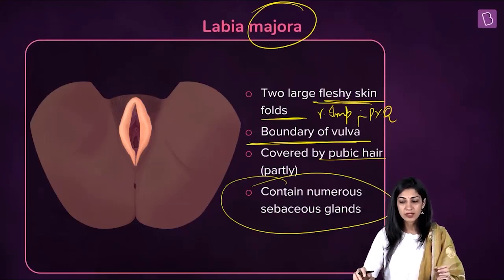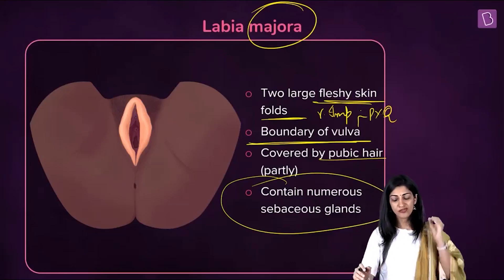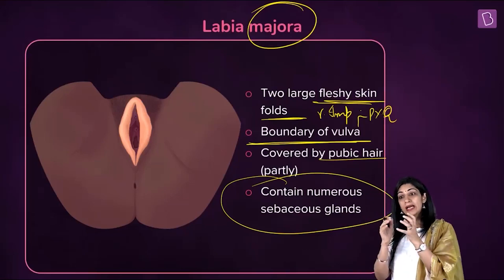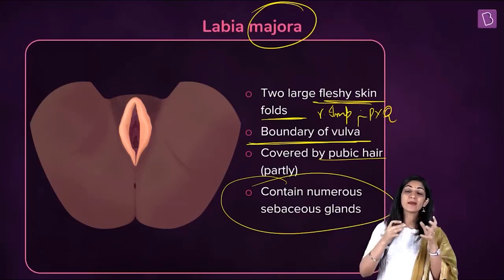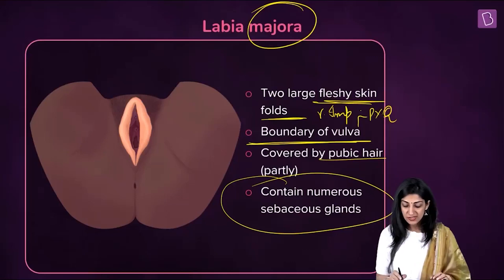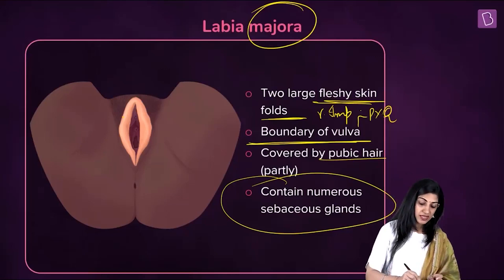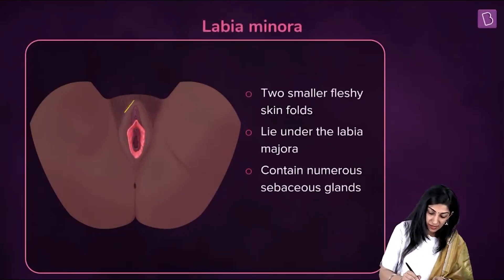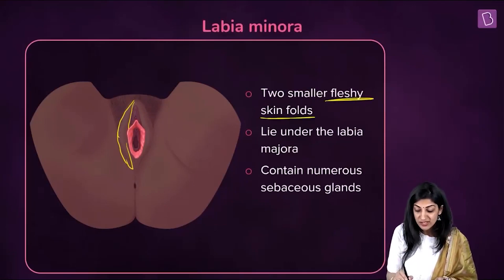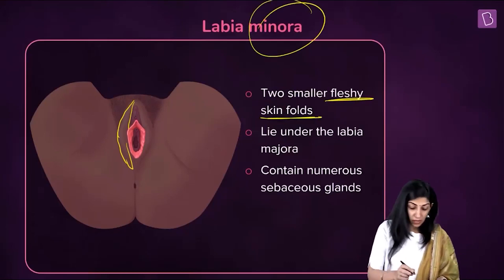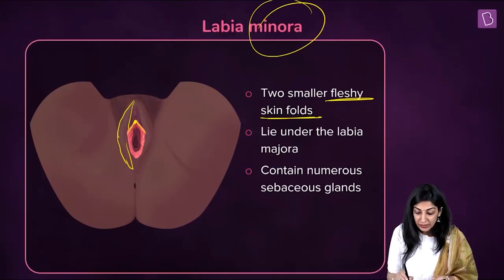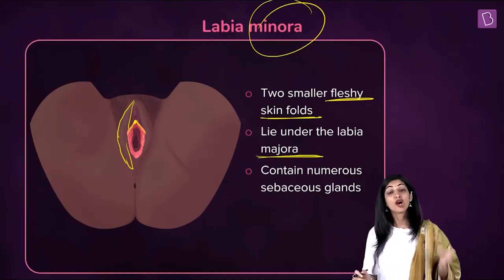The sebaceous glands are present to keep the external genitalia lubricated. The vagina needs lubrication to receive the penis, and the external parts also need to remain lubricated. So many sebaceous glands are present in these folds of skin. Next, inner to the labia majora lie the smaller fleshy skin folds called labia minora. They also contain sebaceous glands for more lubrication.